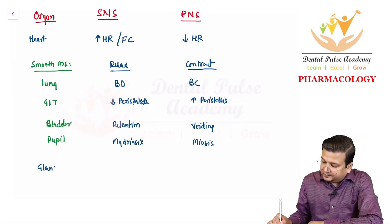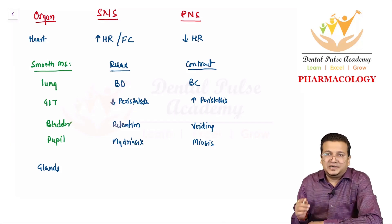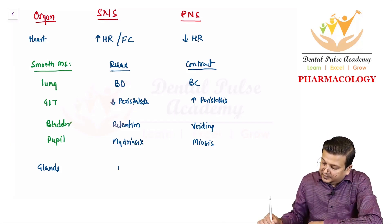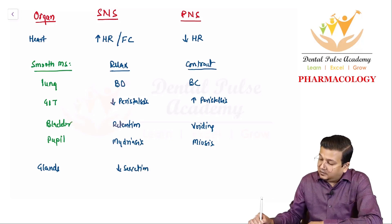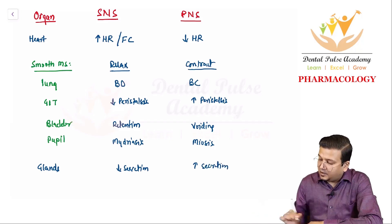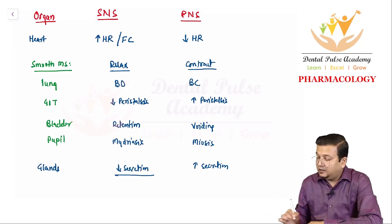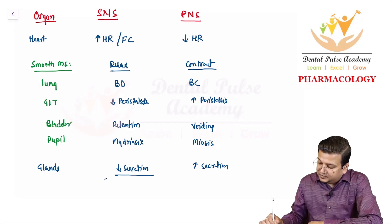For glands, the same pattern holds: sympathetic inhibits, resulting in decreased secretion, while parasympathetic stimulates, resulting in increased secretions. However, there will be an exception, which we will see shortly.